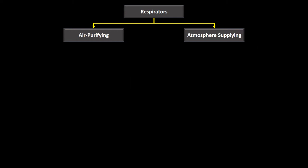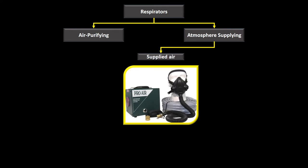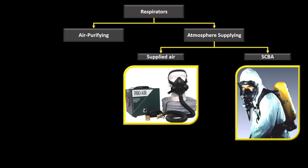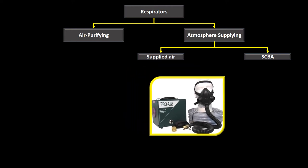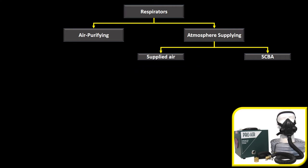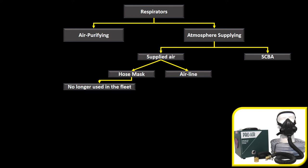Atmosphere supplying respirators are further divided into supplied air respirators and self-contained breathing apparatuses (SCBAs). For supplied air, there are two types: hose mask and airline. The hose mask is no longer used in the fleet.